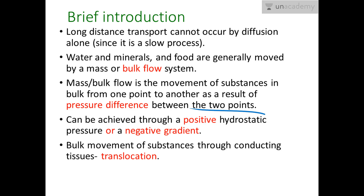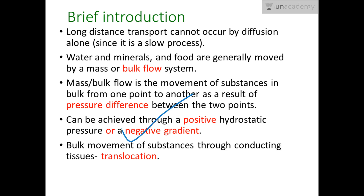This pressure difference is either created in the plant or is already present. It can be achieved by a positive or negative pressure gradient. A positive pressure gradient means creating a high pressure in that area, leading to movement of substances to a low pressure area. A negative pressure creates a low pressure region, extracting substances from high pressure areas. This bulk movement through the conducting system is known as translocation.